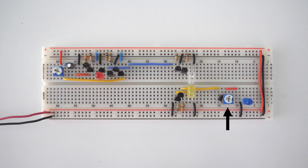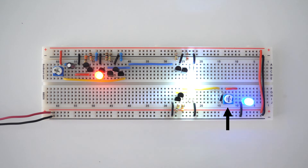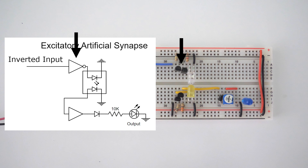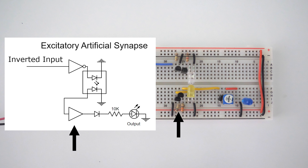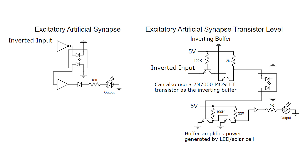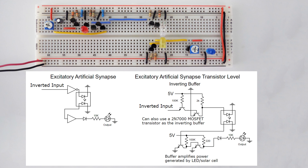To turn this into an artificial synapse, all we need to do is add a diode and some type of resistor to control how much current is sent out. This resistor can be a basic resistor, potentiometer, or a memristor. This artificial synapse has an inverting buffered input, an optocoupler, and an amplified buffered output that is then connected to a diode and resistor. The resistor value is what controls how much charge is sent out.